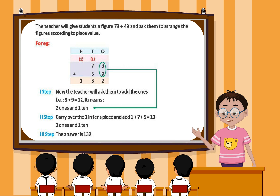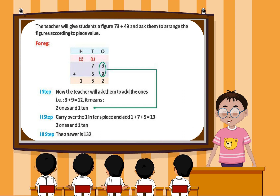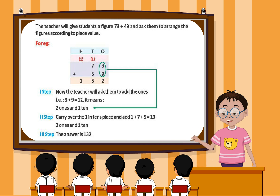For example, first step: the teacher will ask them to add ones. That is, 3 plus 9 is equal to 12, which means 2 ones and 1 ten.